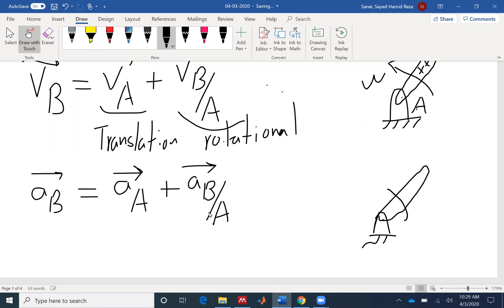So if we have angular acceleration of alpha, point A for point B, we have R alpha and R omega squared. So we have two components of acceleration.